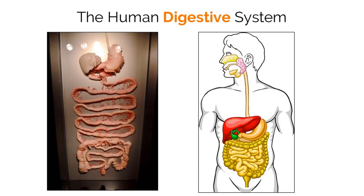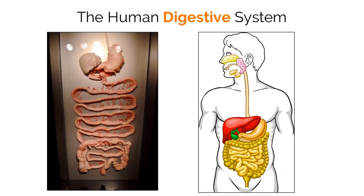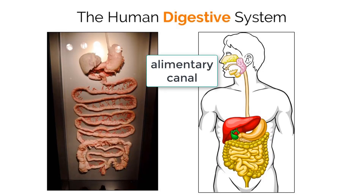Topic 6.1 in IB Biology focuses on the human digestive system. This system is designed to break down and absorb nutrients that will fuel cells in your body and eliminate waste products. The digestive system is split into two different parts. The first part, called the Alimentary Canal, consists of organs that food passes through.